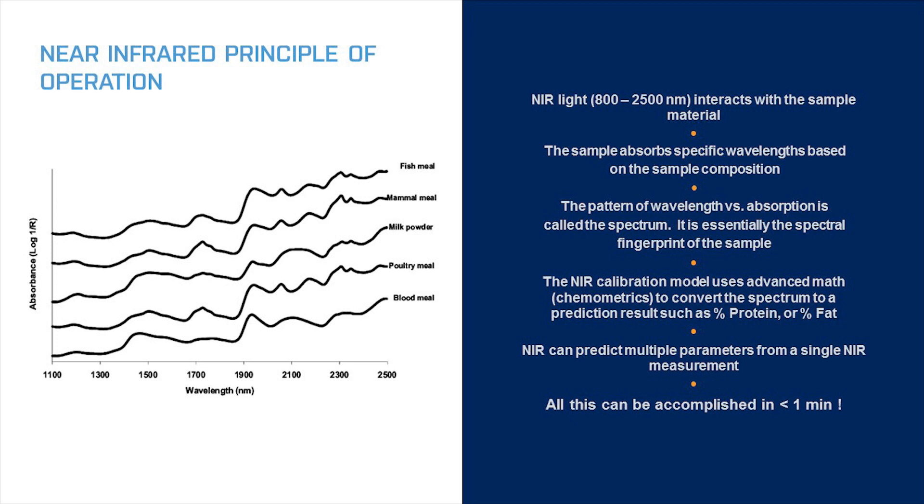The near-infrared spectrum in and of itself is interesting but not useful for our purposes. To get useful information we need to apply a near-infrared calibration model. The calibration model uses advanced math, a specialized field called chemometrics, which essentially converts the near-infrared spectrum into a predicted result for unknown samples.